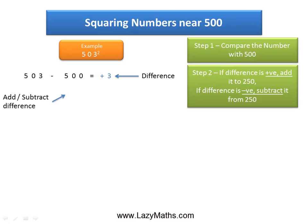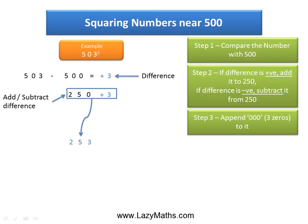As a next step, we take 250 and add that to 3, or 250 plus 3 to get 253. As a third step, we append three zeros to 253 to get 253,000.